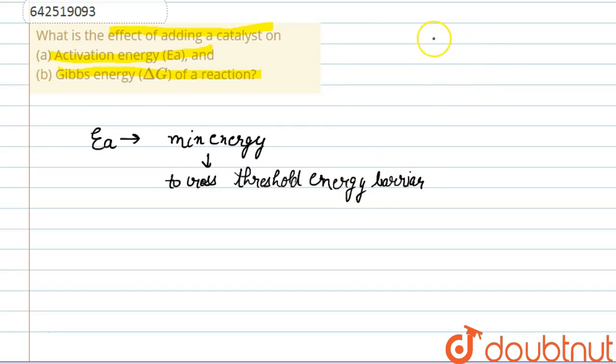Now if we draw the graph for the energy of a reaction, this is the energy. Let us suppose this is the energy of reactant, and we can suppose that energy of products can be this or this. This will be the energy of products. Now, the curve is like this.